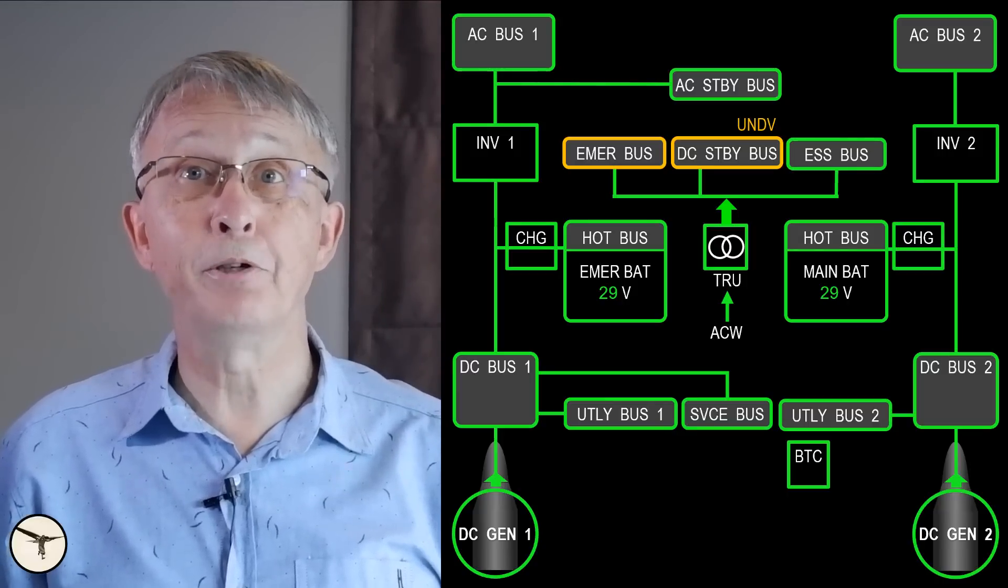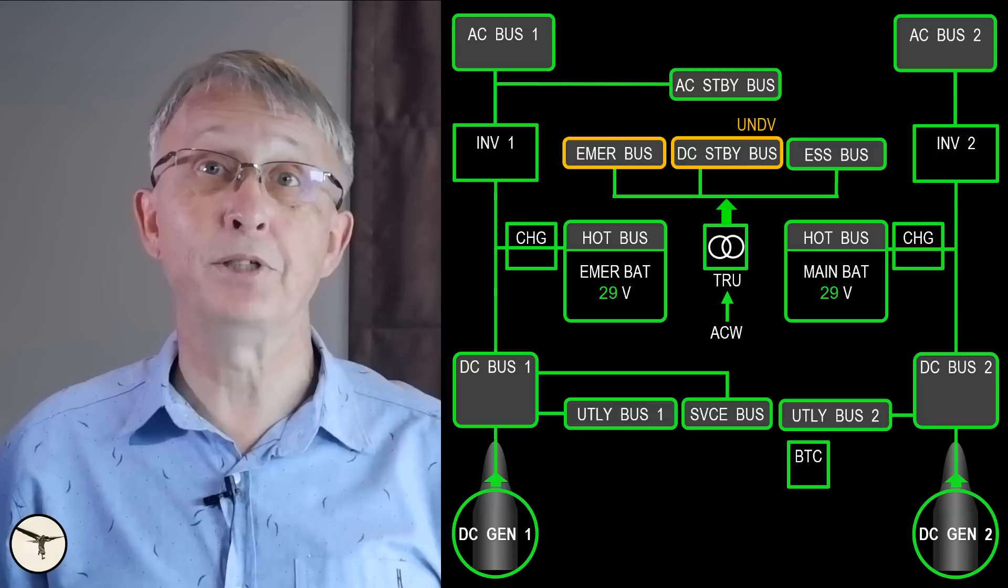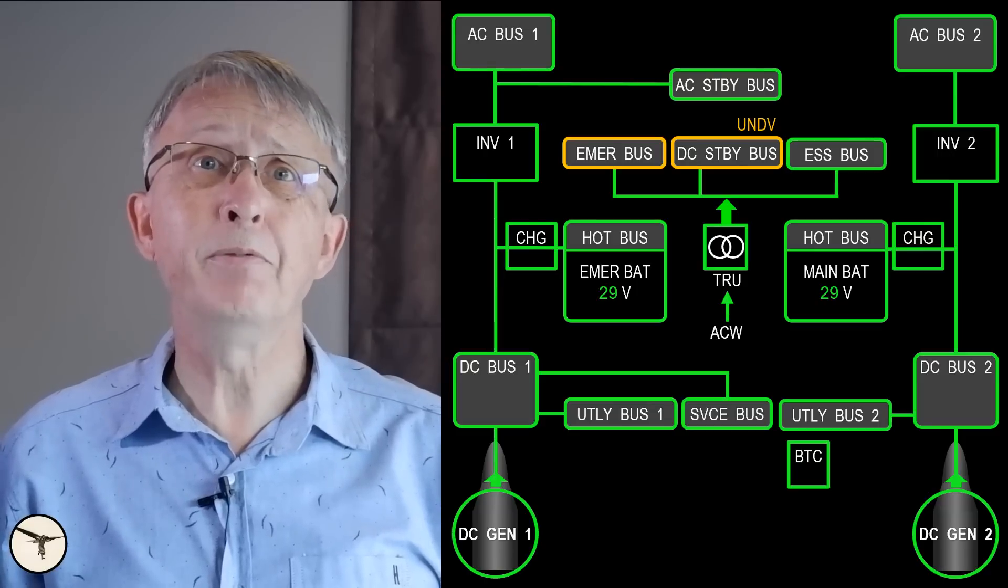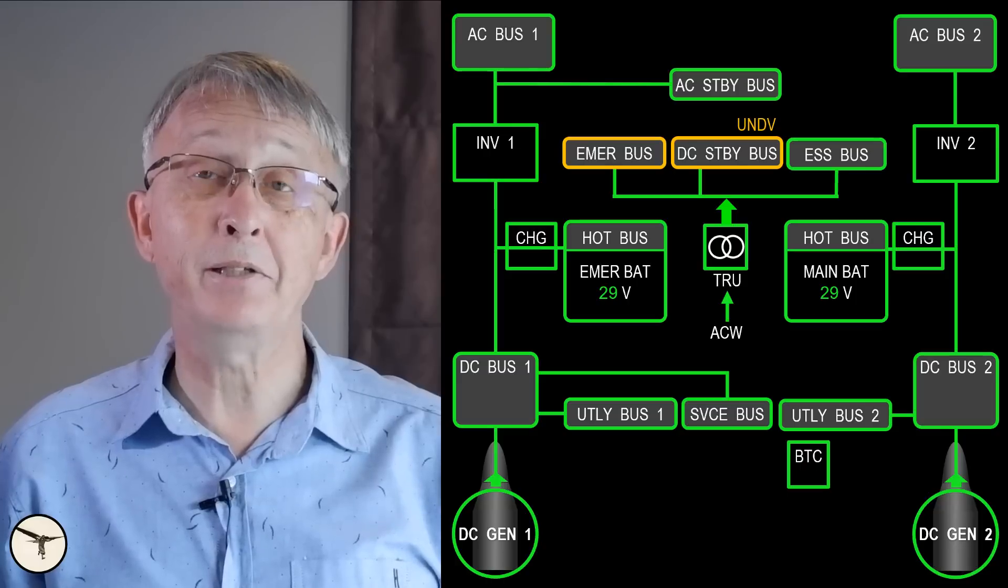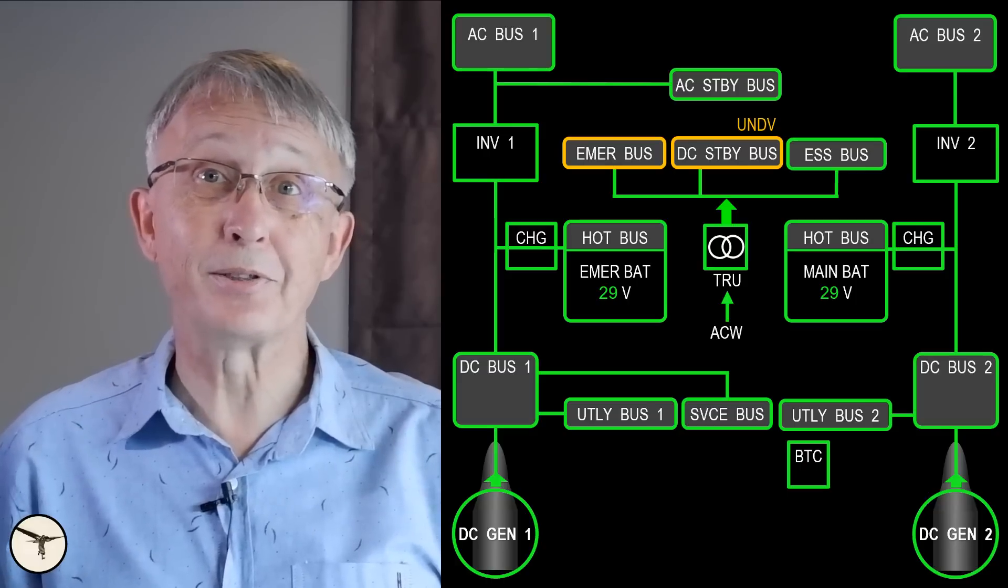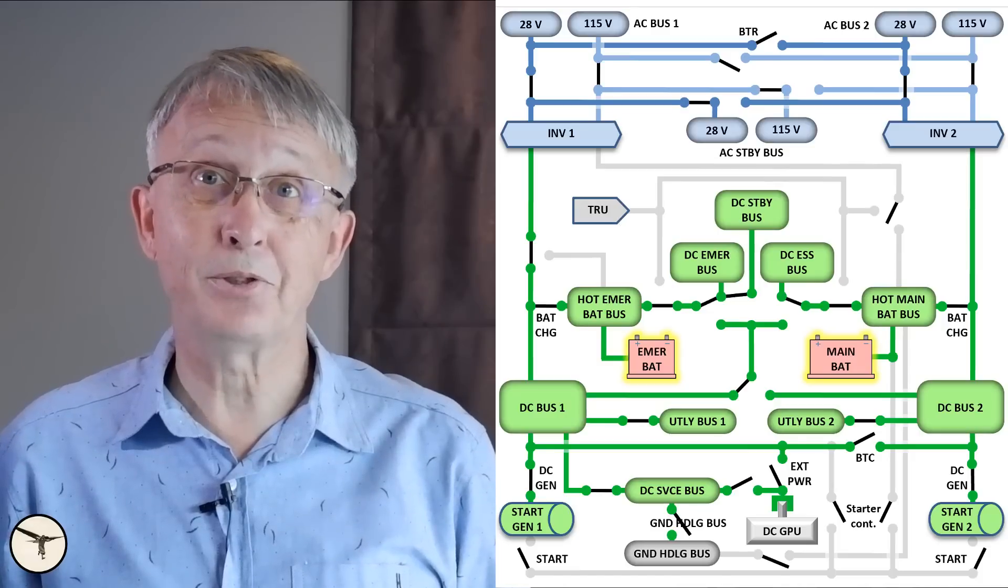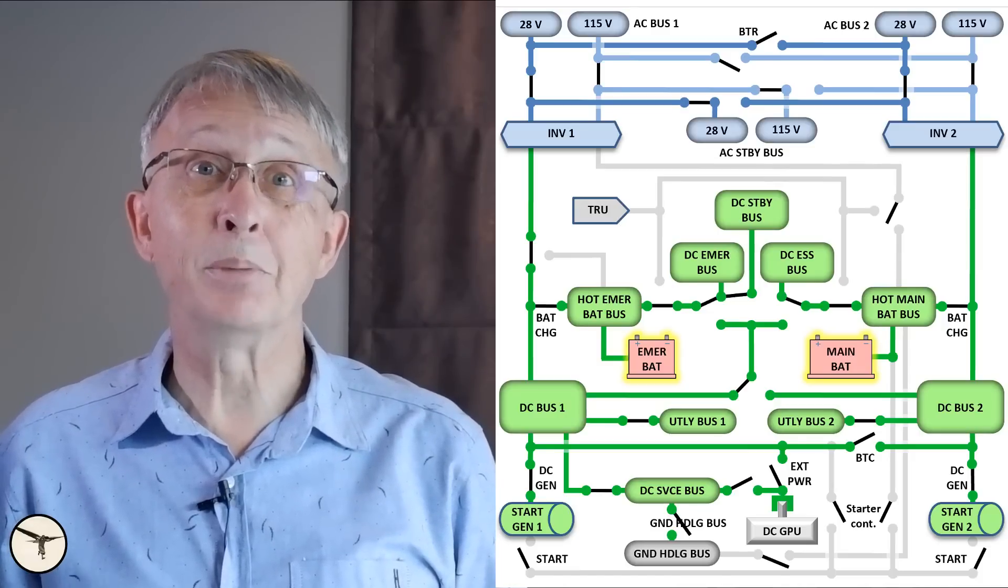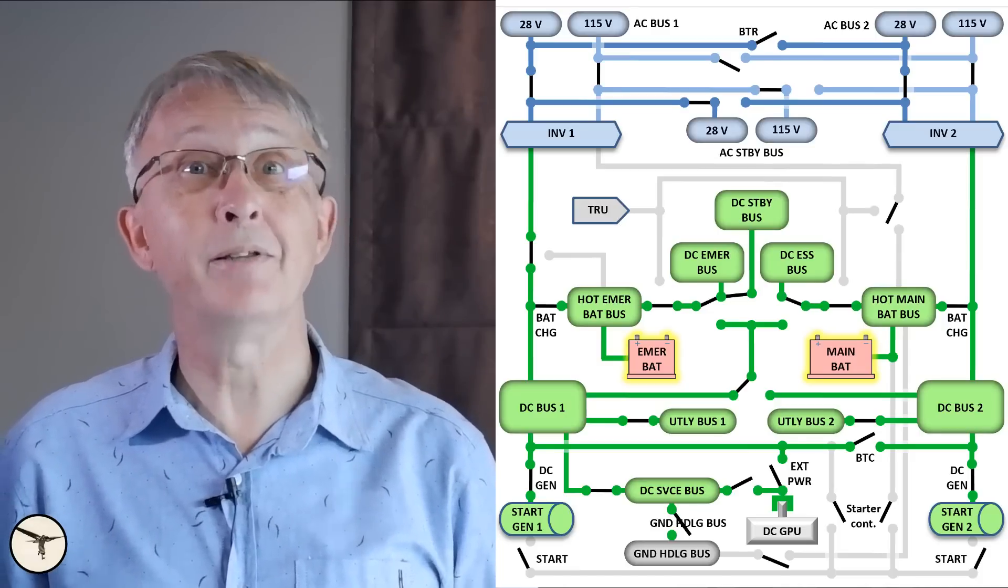The combination of two malfunctioning buses and their associated systems is something we normally don't train for in the simulator. There are just too many combinations. We have 17 buses. Therefore, some knowledge about electrical system can help a lot.